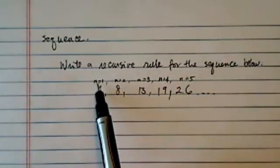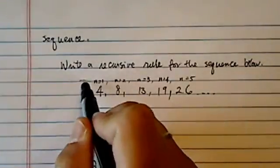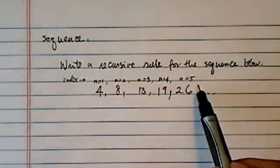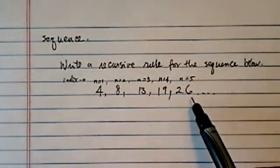What I've done here is I put an index on top, n equal to 1, n equal to 2, so on so forth. We have the fifth term over here which is 26.